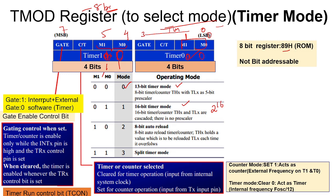Now, the next bit is C bar T. Similarly, Timer 0 also has a C bar T bit. This bit tells you whether you want to work in timer or counter mode. If C bar T is set to 1, it operates as a counter, working on external pulses. If C bar T is 0, it functions as a timer, counting on internal clock pulses.